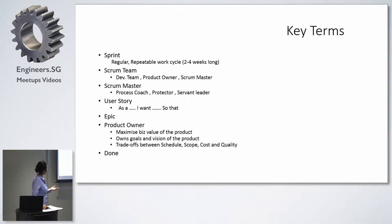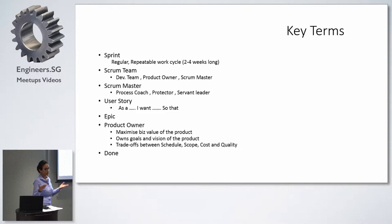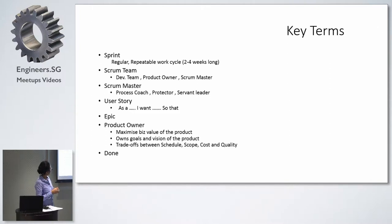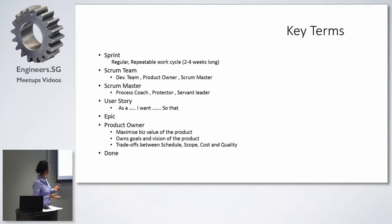So first of all, sprint. In the normal waterfall methodology, we have something called releases, which we do after like three months or six months, depending upon whatever suits us. In Scrum, we call it a sprint. The difference is that we make smaller releases because we want to deliver customer value often and fast. Typically a sprint is two to four weeks long, though I have seen some sprints one week long also.